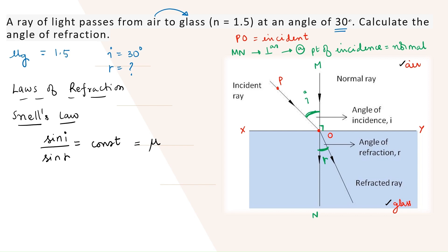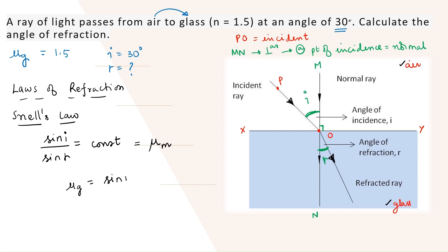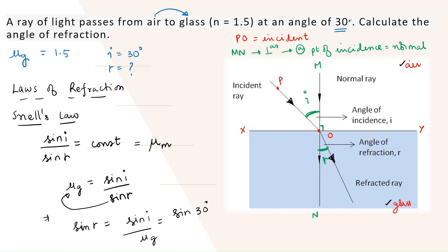Refractive index of which medium? The refractive index of the medium. The light is traveling from air to glass, so the angle of incidence is in air and the angle of refraction is in glass. Therefore, the refractive index of glass is equal to sine i divided by sine r. Now, what are we supposed to find? We need to find r. Using simple mathematics, we rearrange: sine r is equal to sine i divided by mu of glass. Sine i is sine 30 degrees, and the refractive index is 1.5.